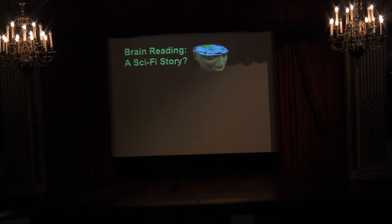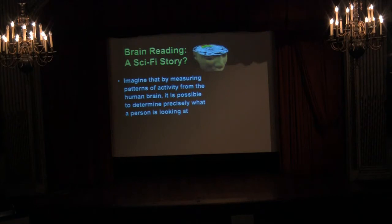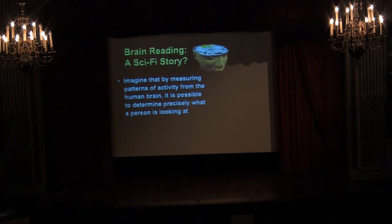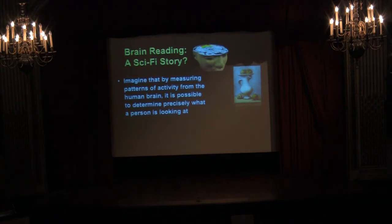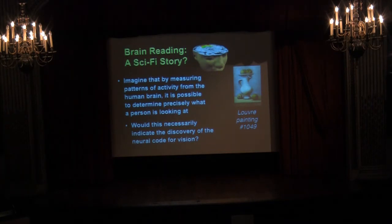Following our previous speaker Uri Hassan, why not start with a story — a science fiction story? Imagine that by measuring patterns of brain activity from the human brain, it is possible to determine precisely what a person is looking at. A subject is in the scanner, we're presenting lots of images, and we present a randomly selected image. We look at the person's brain activity and say, it is the painting done in an impressionist style with the apples, the plate, the vase — Cézanne-like — it is indeed Louvre painting 1049, with 99% confidence. Would this be an impressive feat? And if we could do this, does it necessarily indicate that we understand the neural code for vision?